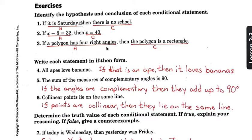Number three, if a polygon has four right angles, notice the hypothesis, then the polygon is a rectangle is the conclusion.